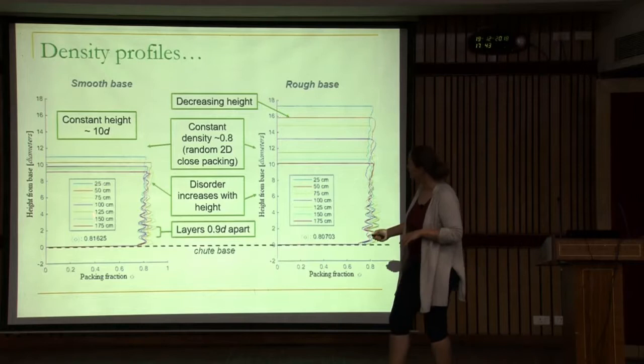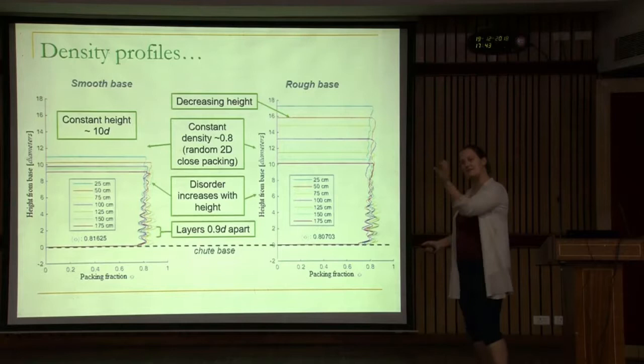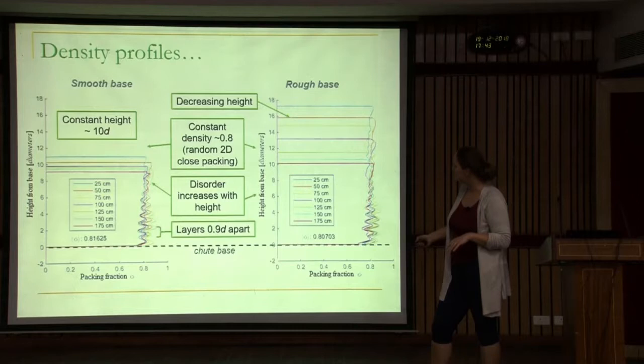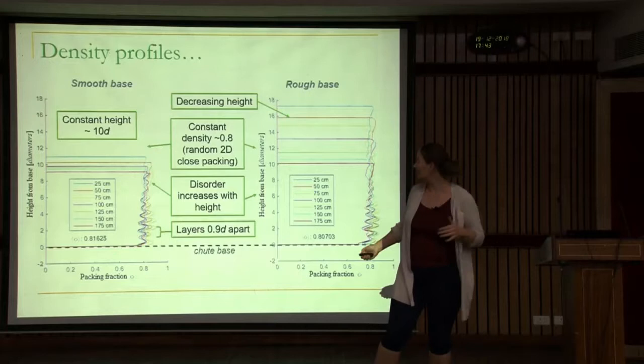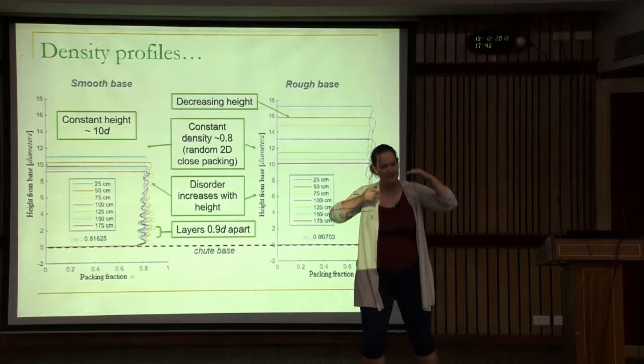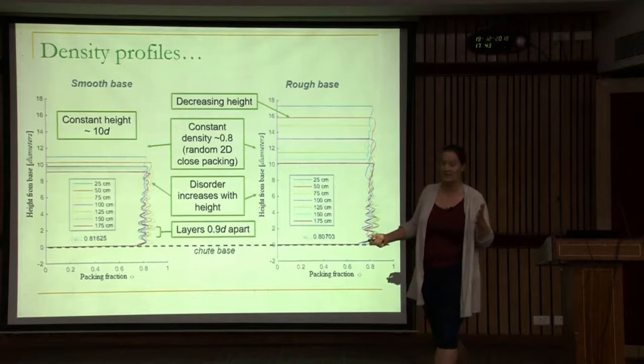Comparing a smooth and a rough base: on the left-hand side I show seven different realizations — seven different positions down the chute. For the smooth base, the density profiles are about the same height and you really see this wiggle. Even with a 10% size difference in our manufactured particles, we still have layering at just under a diameter apart — these preferred layers with wiggles appearing. In general the density is very constant with depth.